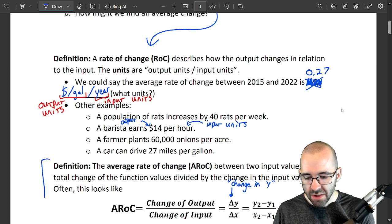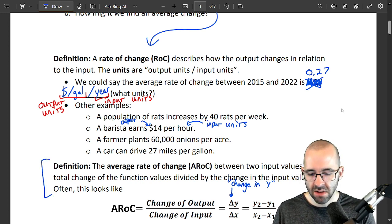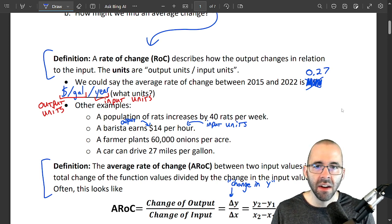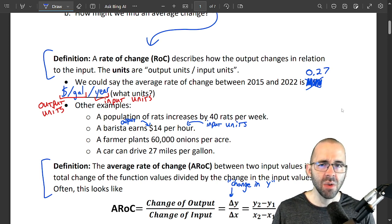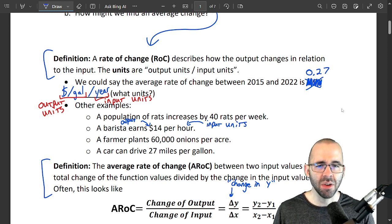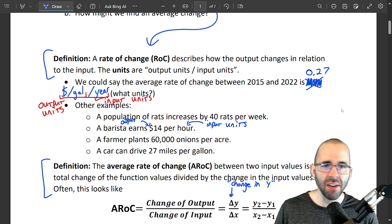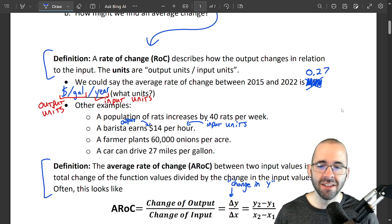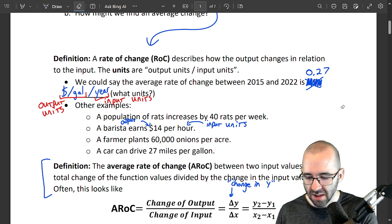And most of the time in this class we're going to talk about average rate of change. This up here is really just to get us there and for us to think about the units. Basically, we're going to be talking about these two terms interchangeably: rate of change, average rate of change. Don't worry about the difference—they're going to be basically the same for our class. Let me know if you have any questions. Have a good one, and bye.